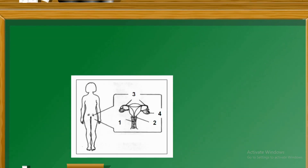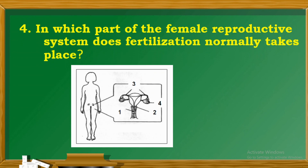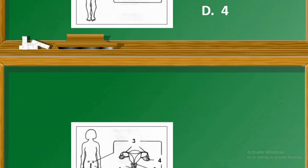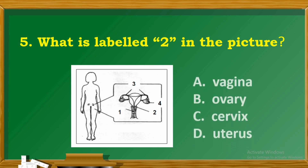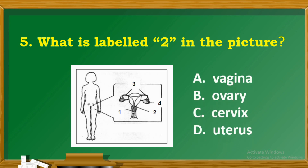Question 4: In which part of the female reproductive system does fertilization normally take place? Question 5: What is labelled two in the picture? A. Vagina. B. Ovary. C. Cervix. D. Uterus.